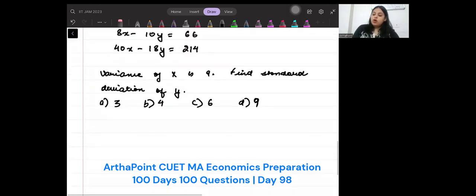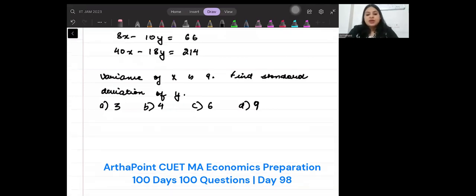So in order to solve this question what you can go ahead and do is you need to find BYX and BXY. That means you need to find the slope coefficients in the two cases.